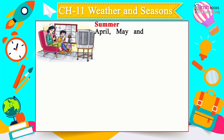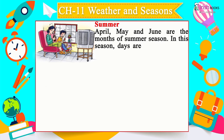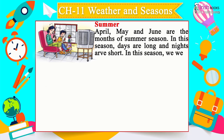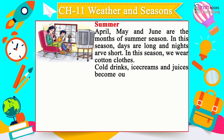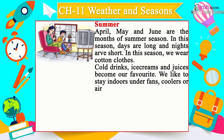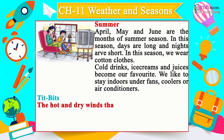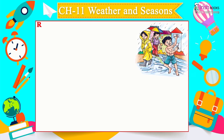Summer: April, May and June are summer months — days are long and nights are short. We wear cotton clothes. Cold drinks, ice creams and juices become our favourite. We like to stay indoors with fans, coolers or air conditioners. The hot and dry winds that blow during summer are called loo.